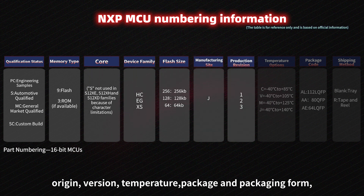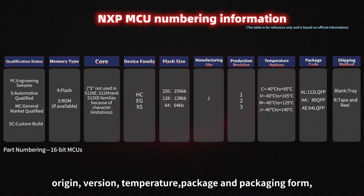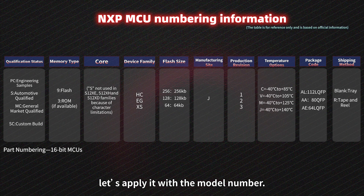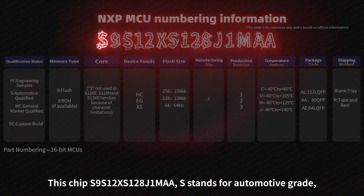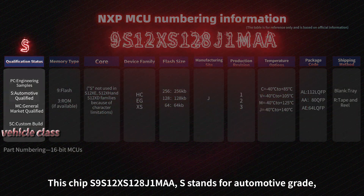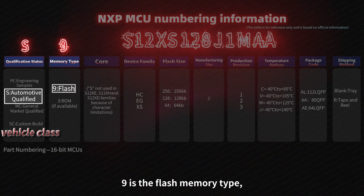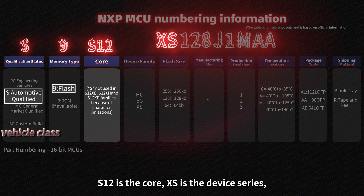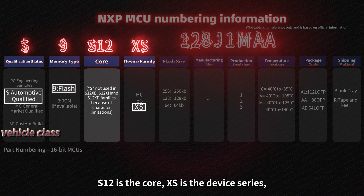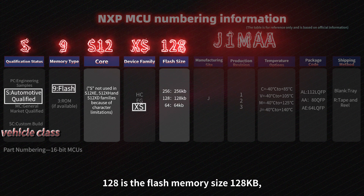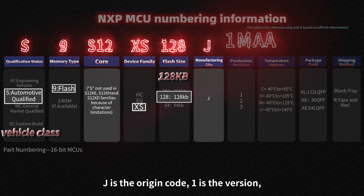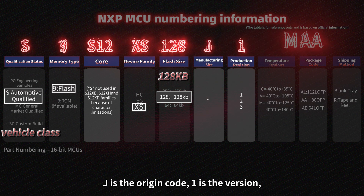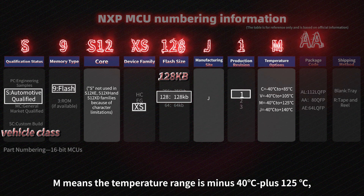Let's apply it with the module number. This part, XS118S, stands for automotive grade. 9 is the flash memory type, S12 is the core, XS is the device series, 128 is the flash memory size at 128 KB, and Z is the origin code. 1 is the version, and M means the temperature range is minus 40 degrees to 125 degrees.